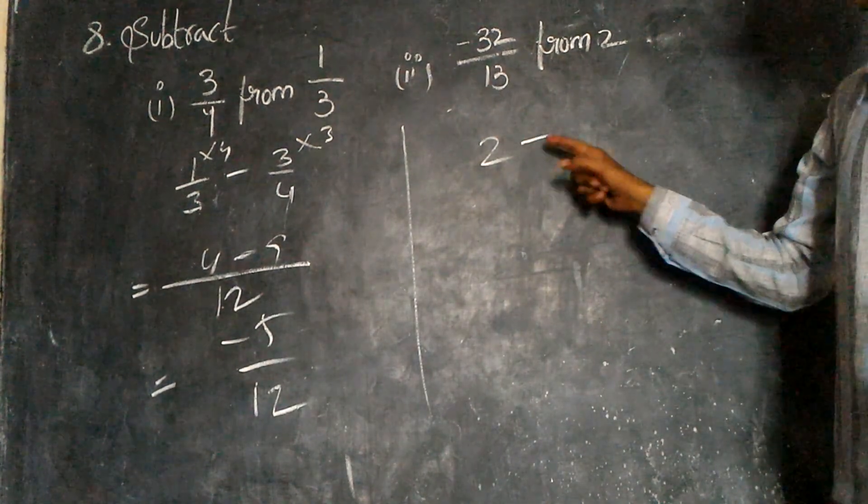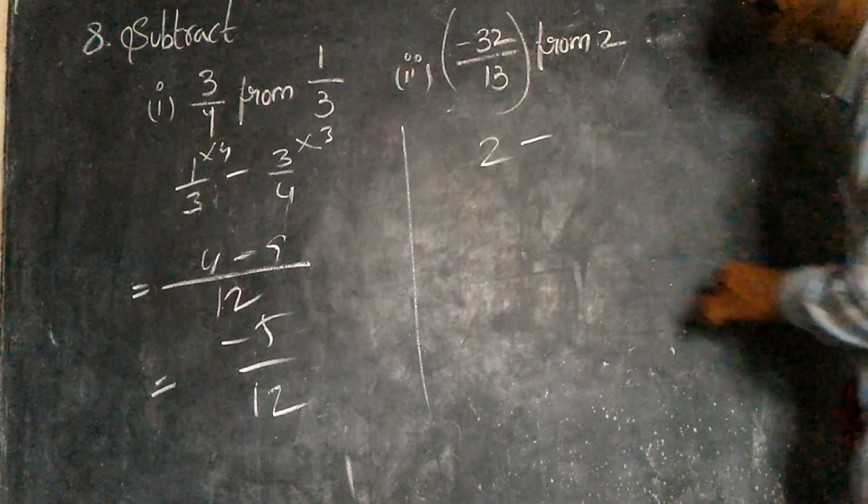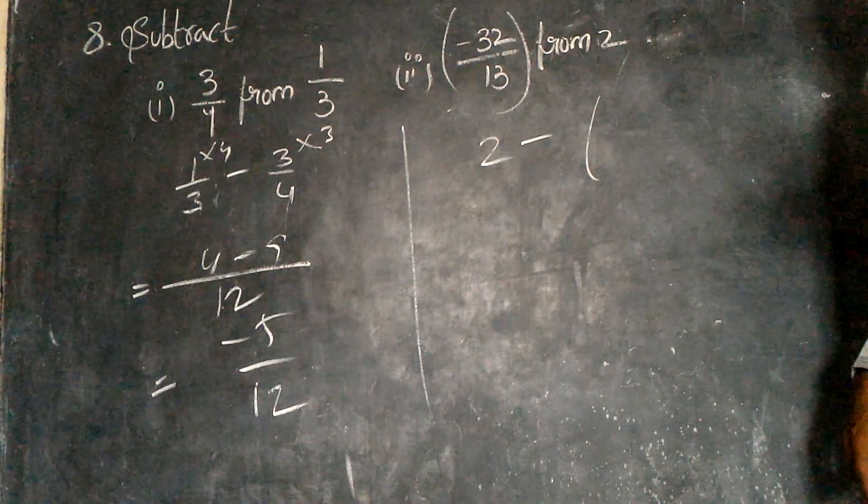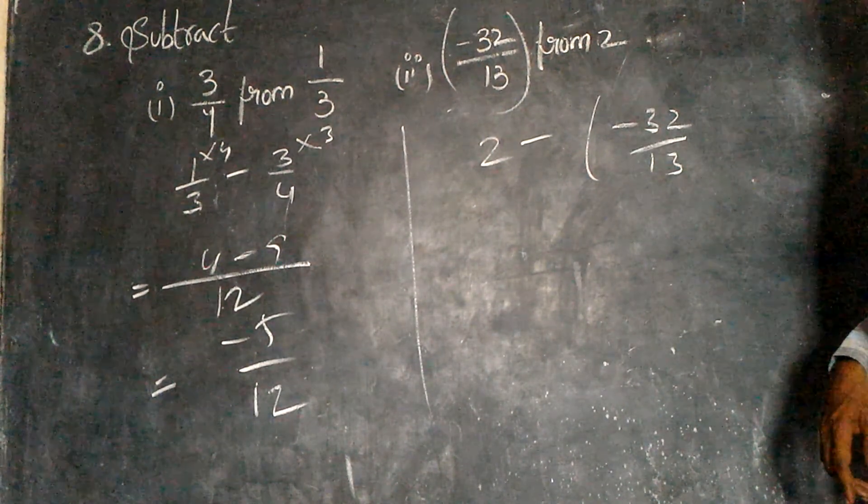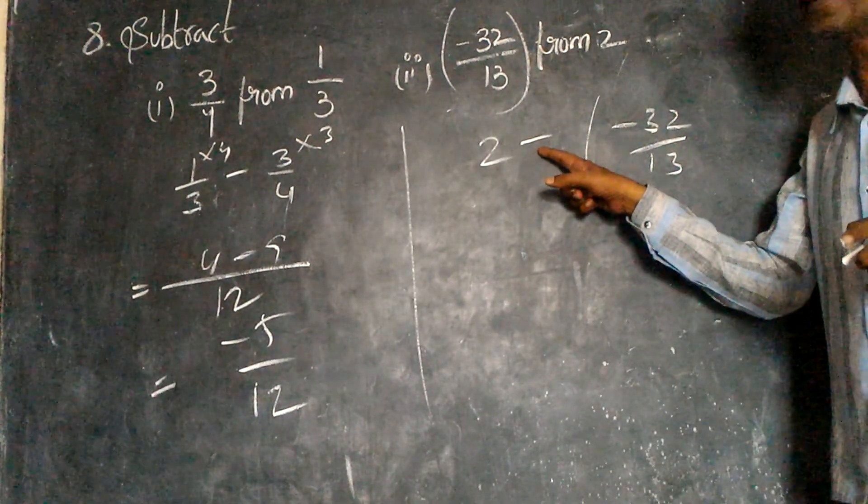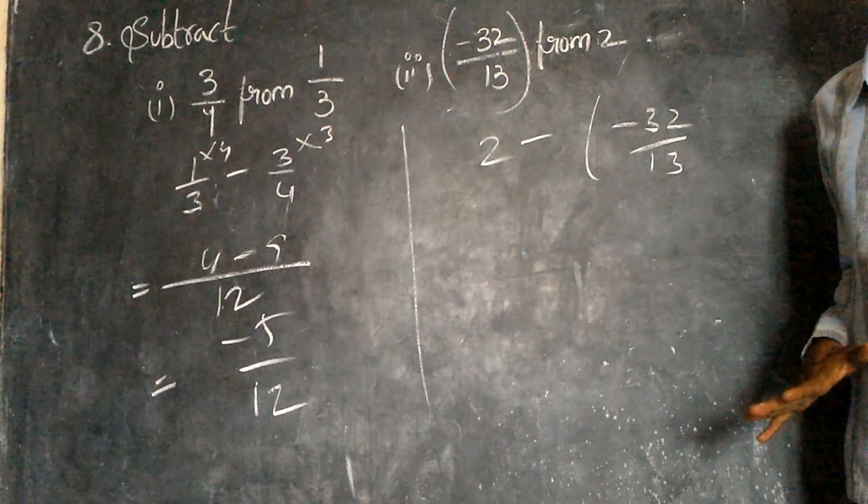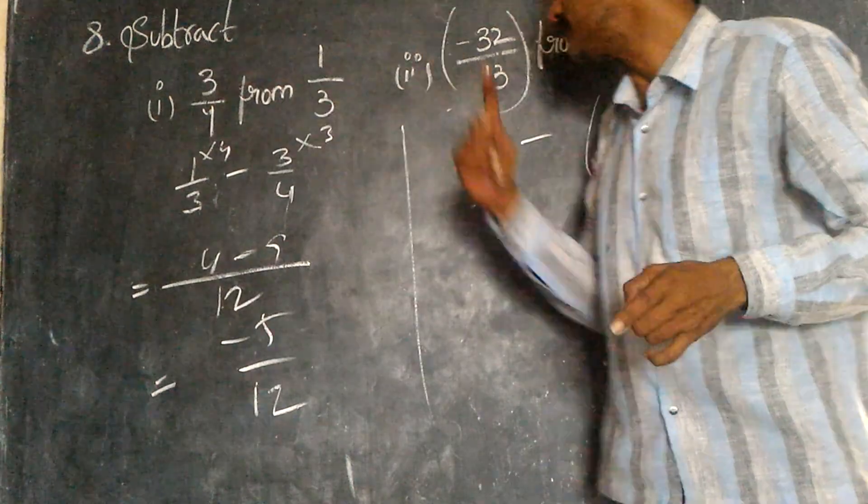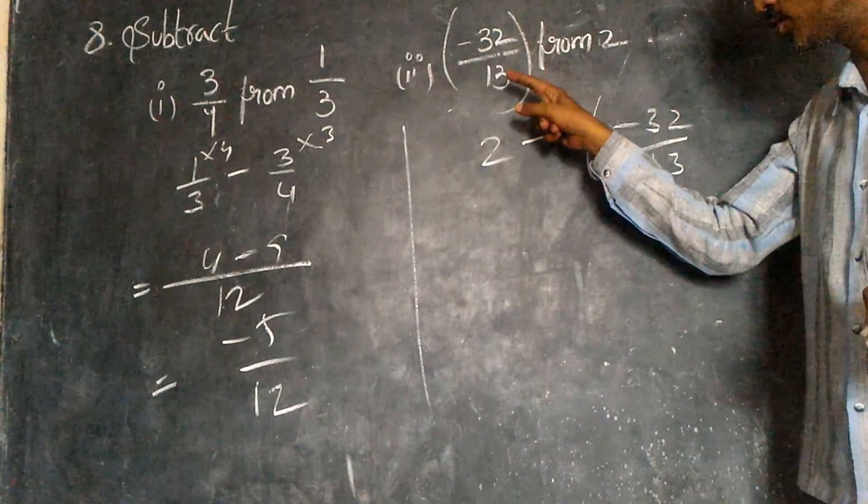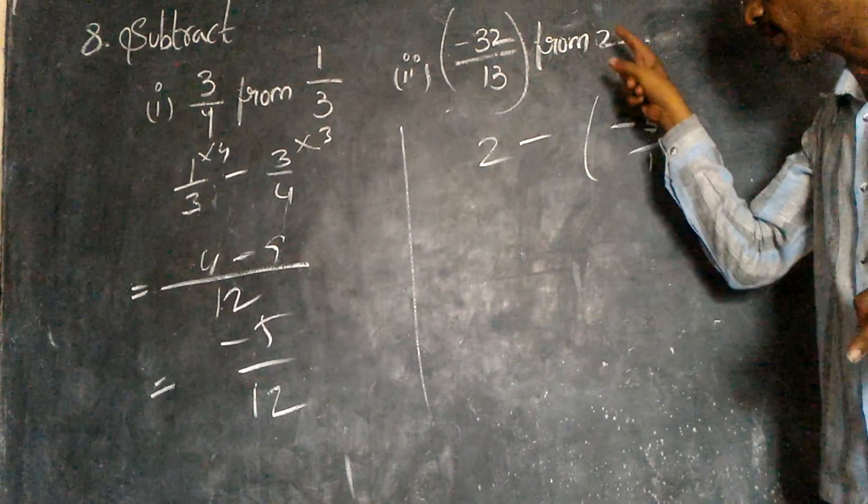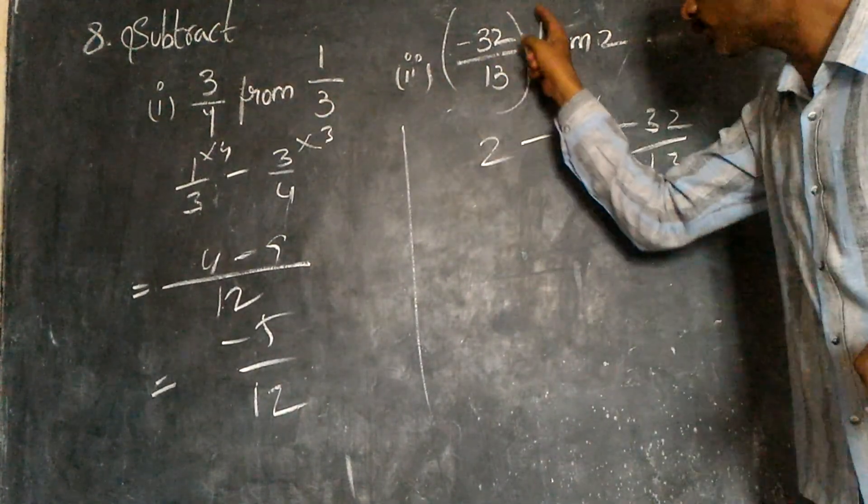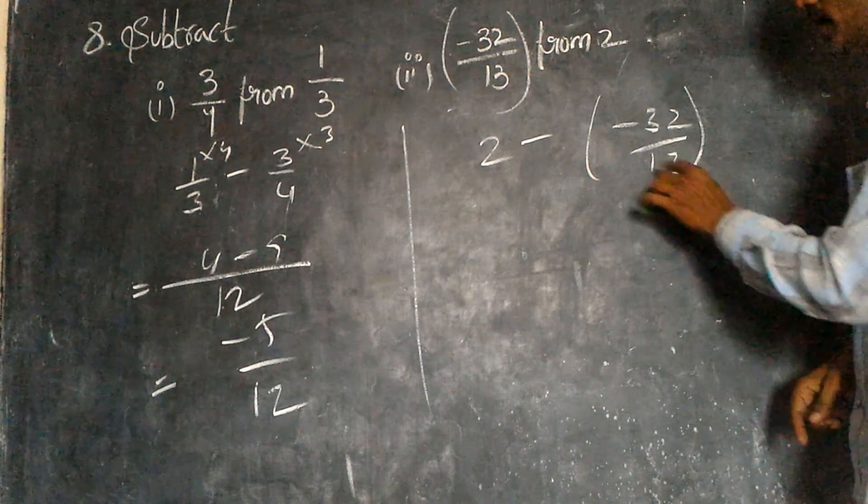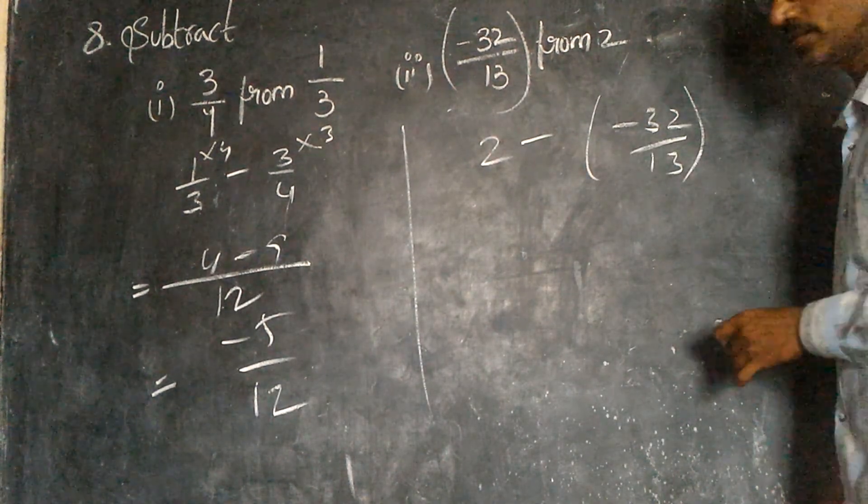Subtract minus 32/13 from 2. Minus 32/13 from 2. Two minus must be subtract. This total number is equal to minus or minus? Yes.